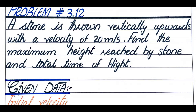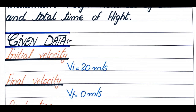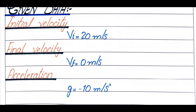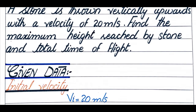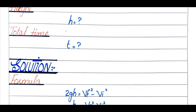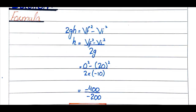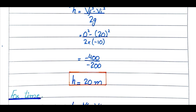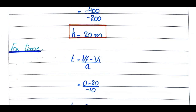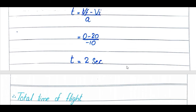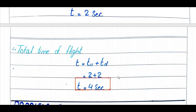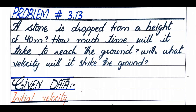Problem 3.12 (implied): A stone is thrown vertically upwards with a velocity of 20 m/s. Find the maximum height and total time of flight. Initial velocity is 20 m/s, final velocity is 0, acceleration is −10 m/s². Using the formula, height is 20 meters. For time, t = (vf − vi) / a gives 2 seconds going up, so total flight time is 4 seconds.